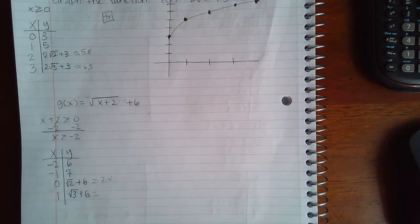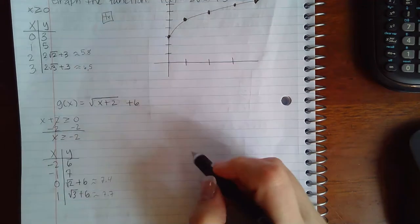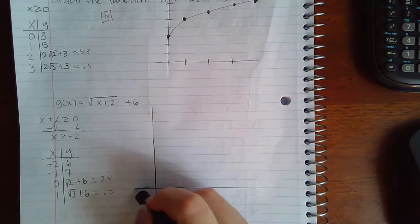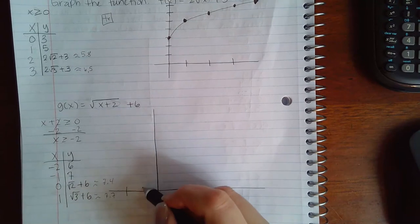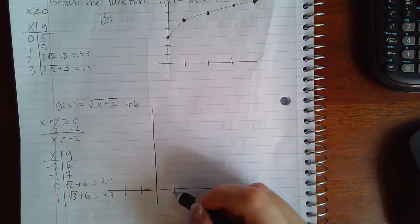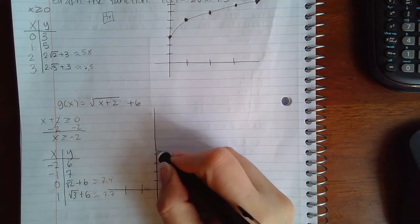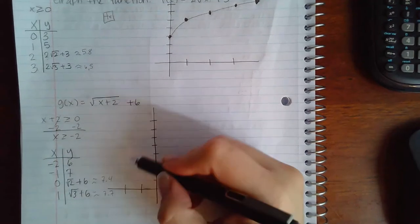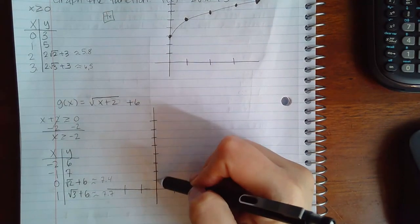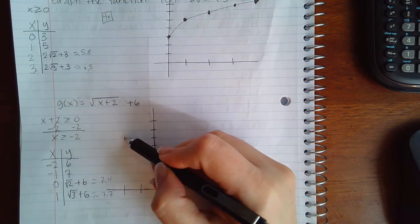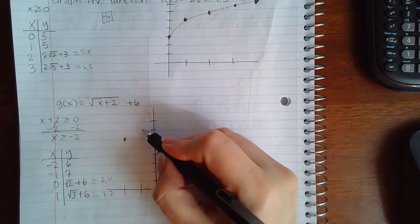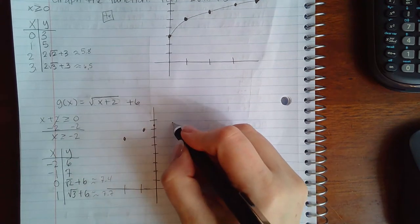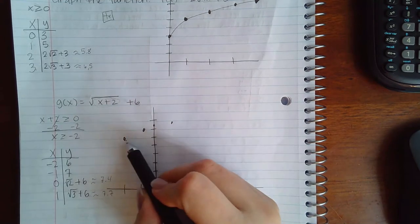So if I'm going to graph this on my paper, we have -2, -1, 0, and 1, and then we have 1, 2, 3, 4, 5, 6, 7, 8. So let's plot (-2, 6), so that's here. (-1, 7). (0, 7.4). And then (1, 7.7).